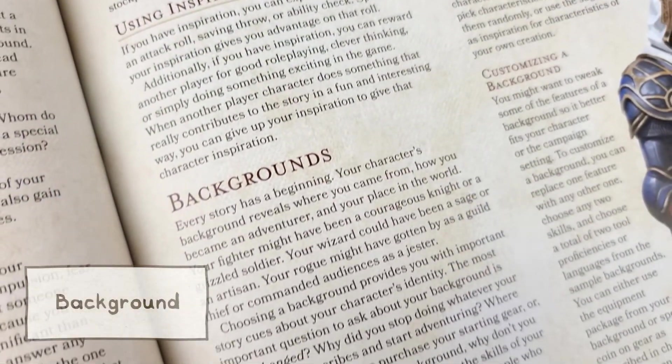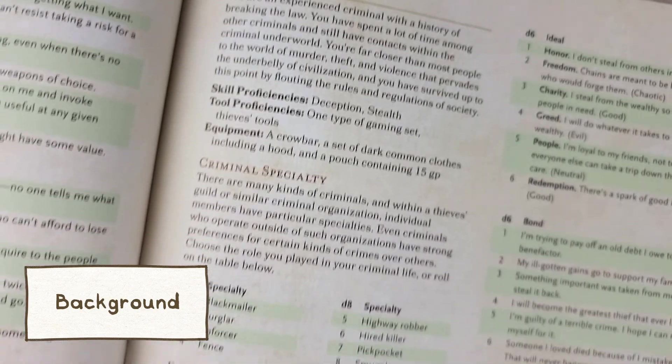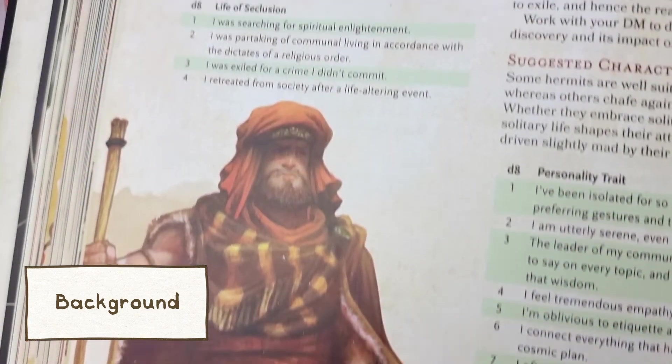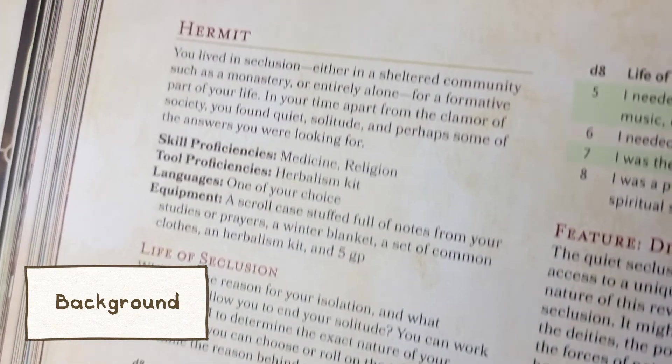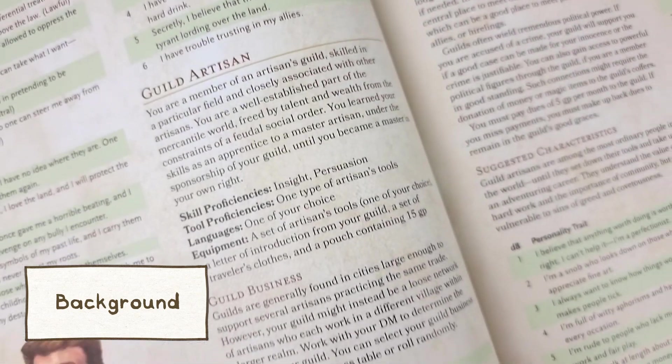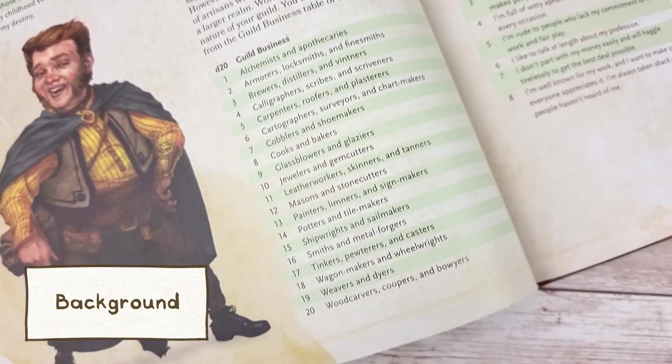Your character's background is essentially the things that they have learned in the past that benefit them today. There are lots of options for backgrounds from sneaky charlatans and criminals to lonely hermits to majestic folk heroes and wretched urchins. Pick one that you feel suits your character best.